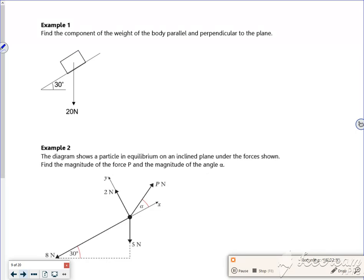So let's have a quick look at this example one. Right, so I've got R. I've got 20 newtons. That's going to be 30. So that'll be 20 cos 30, and that'll be 20 sine 30. So it says find the component of weight of the body parallel and perpendicular to the plane.